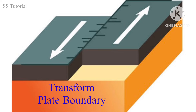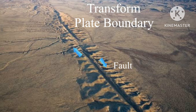There is another type of plate boundary where two plates are not moving apart or towards each other, but move side by side in a sliding motion where no construction or destruction occurs. This type of plate boundary is called a transform plate boundary. Due to this type of plate movement, faults and rift valleys are created.